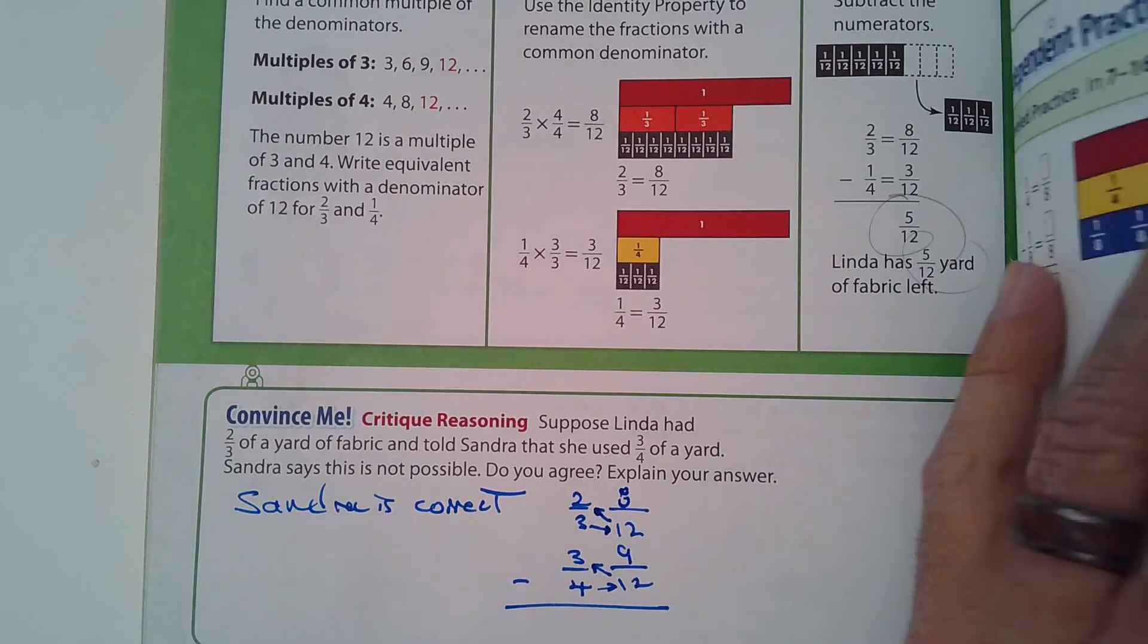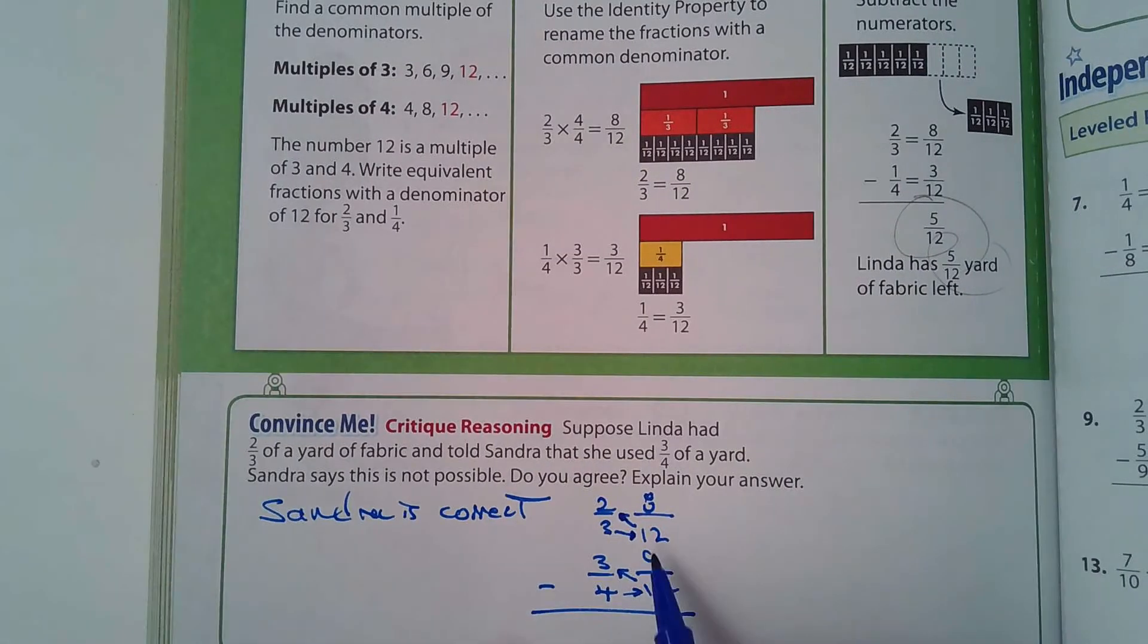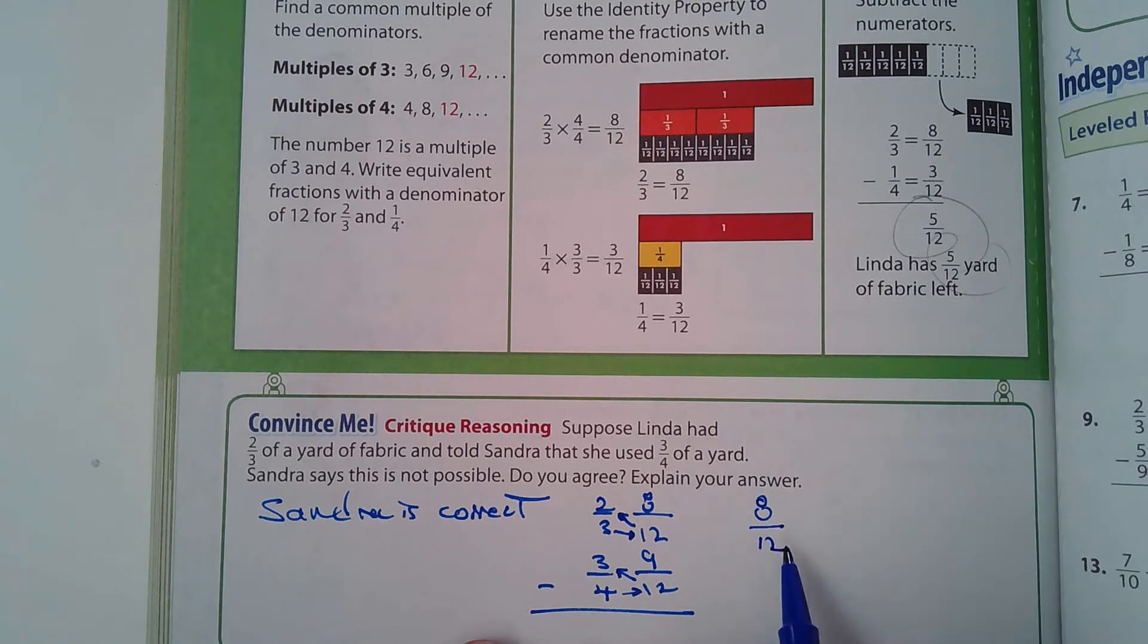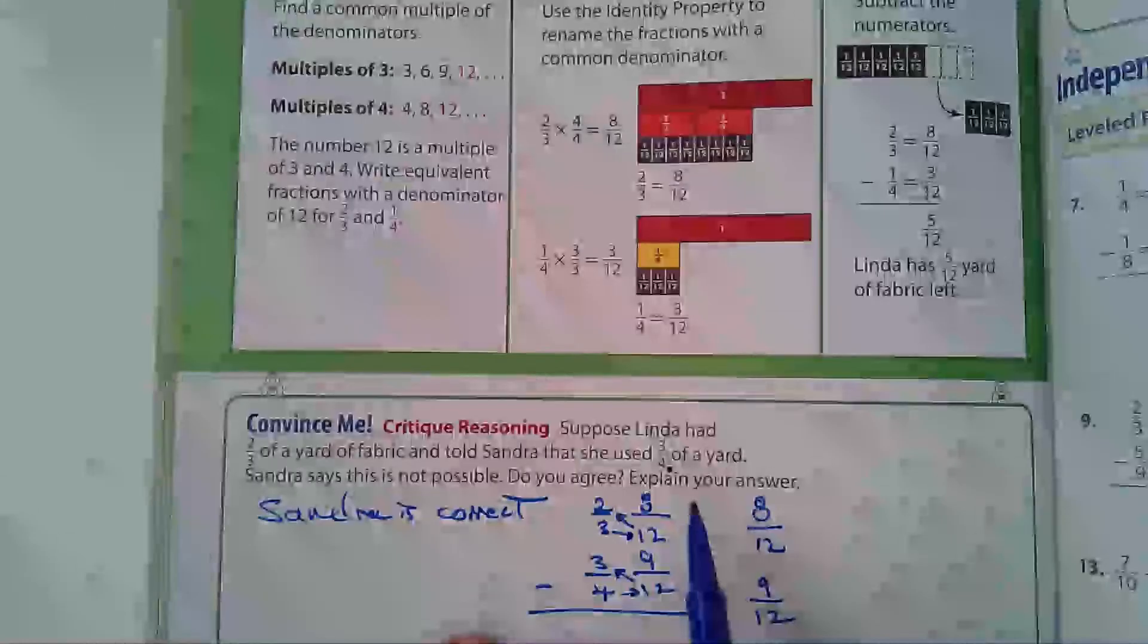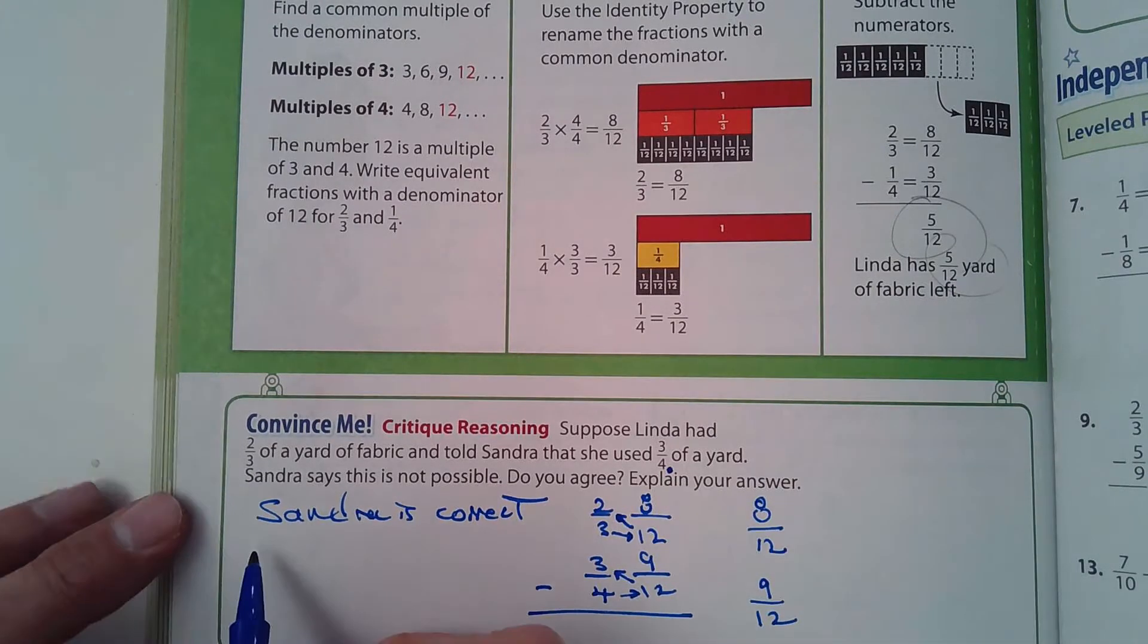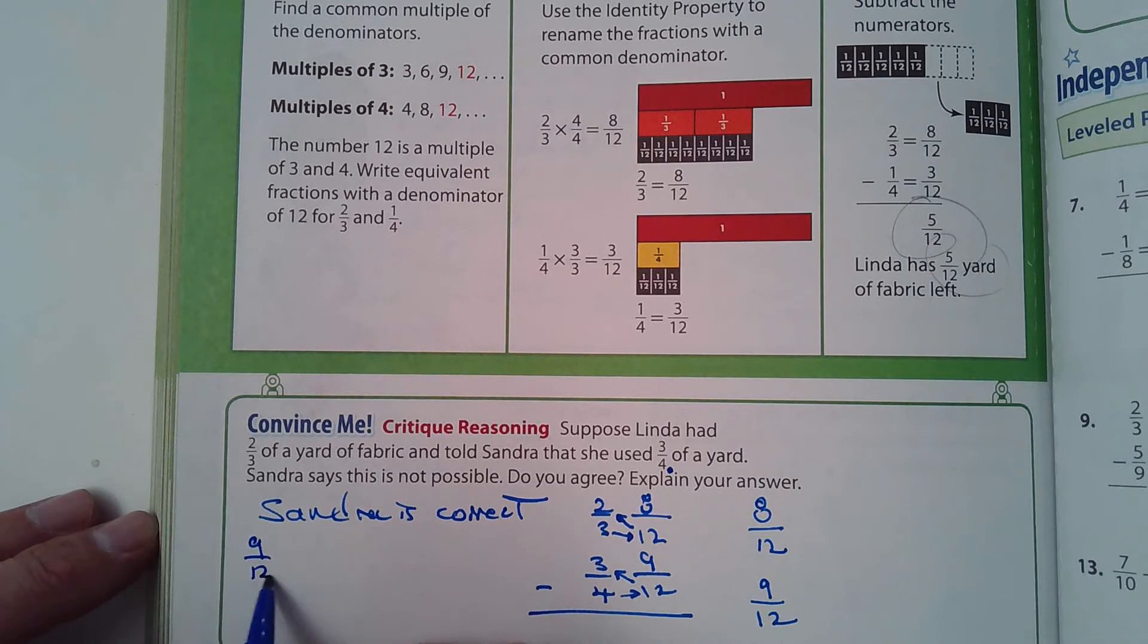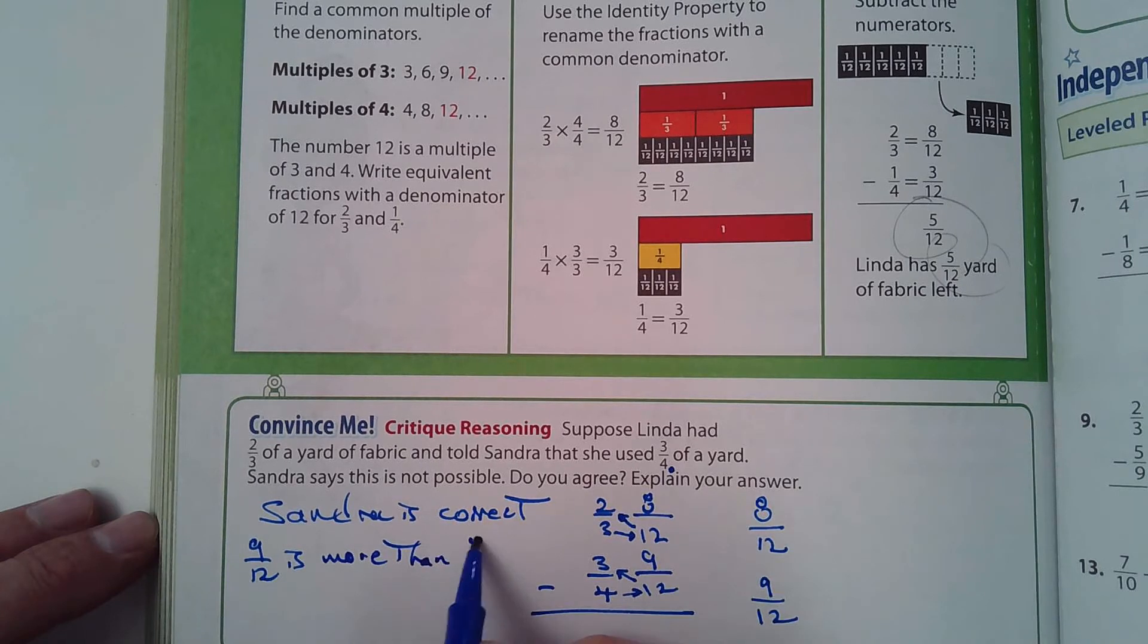Four goes into 12 three times and three times three is nine. Three goes into 12 four times and four times two is eight. So now we have two fractions. Eight-twelfths and another one is nine-twelfths. The nine-twelfths represents the three-quarter that she used.